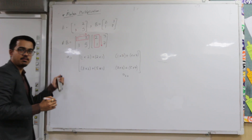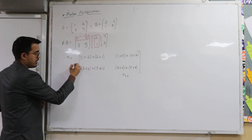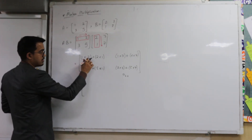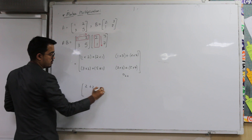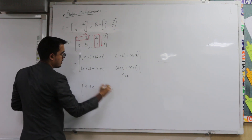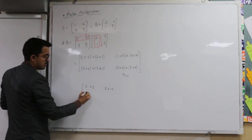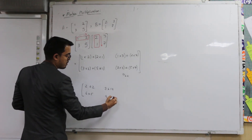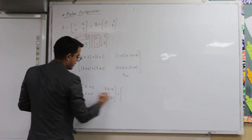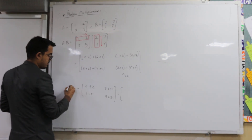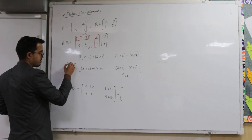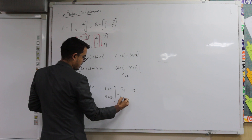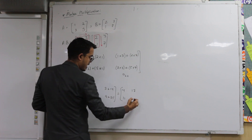So this is how matrix multiplication works. Don't worry if you are not getting it — we will solve more questions. The results are 2 plus 2, 3 plus 14, 6 plus 5, and 9 plus 35. So your AB matrix is 4, 17, 11, and 44.